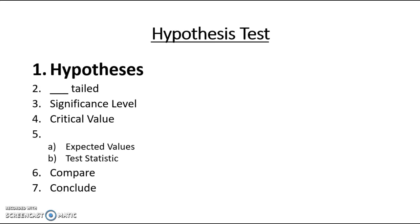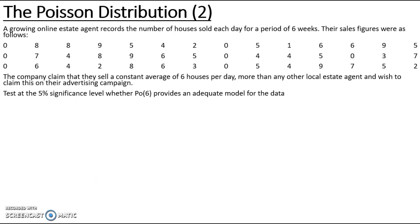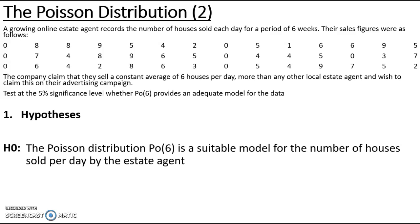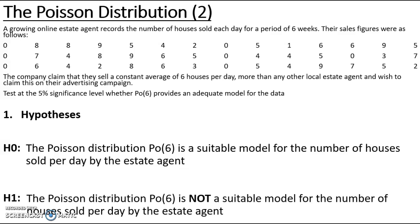Let's start by looking at our hypotheses. In this question we are looking for a Poisson distribution. So putting that into context, H₀ is that a Poisson distribution Po(6) is a suitable model for the number of houses sold per day by the estate agent. H₁ is therefore the opposite: that the Poisson distribution is not a suitable model for the number of houses sold per day by the estate agent.